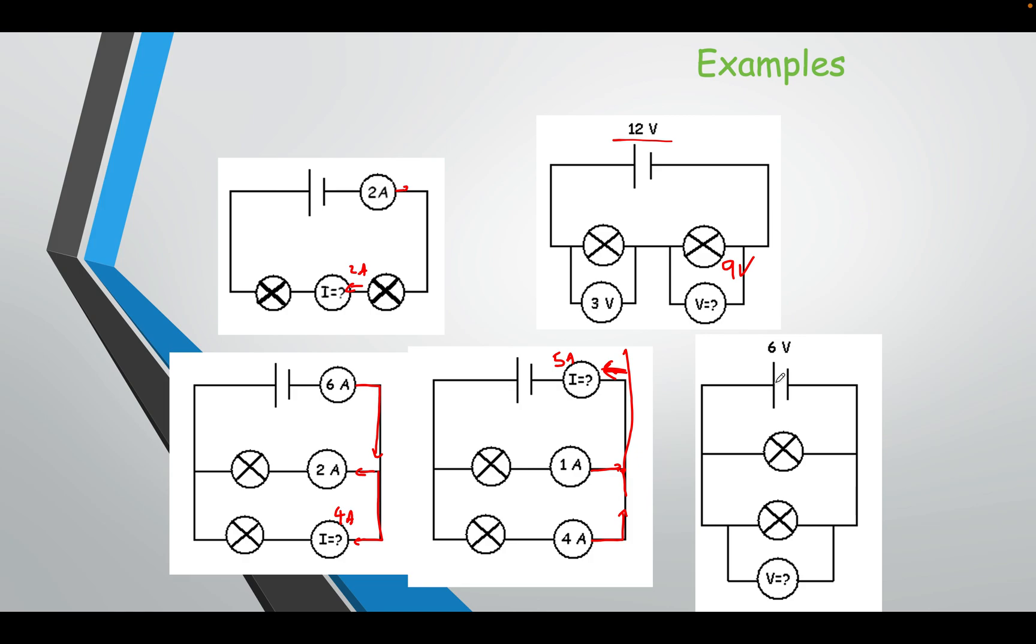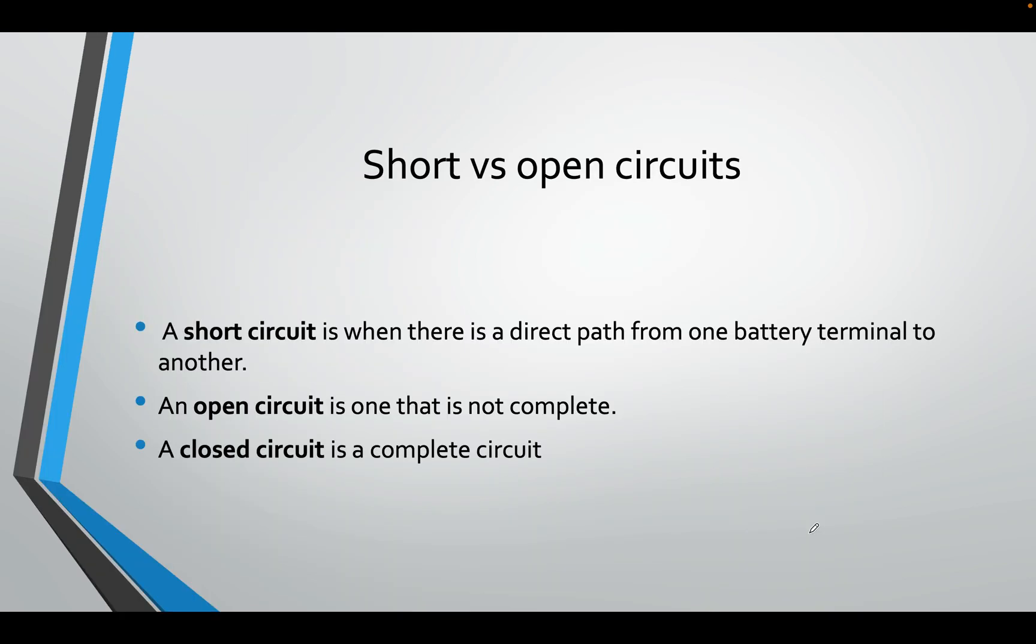Okay, so parallel 6 volts. Remember, they are not sharing. There is only one bulb in this path. Similarly, there is only one bulb in the smaller path. So each of them will have 6 volts. Very nice.